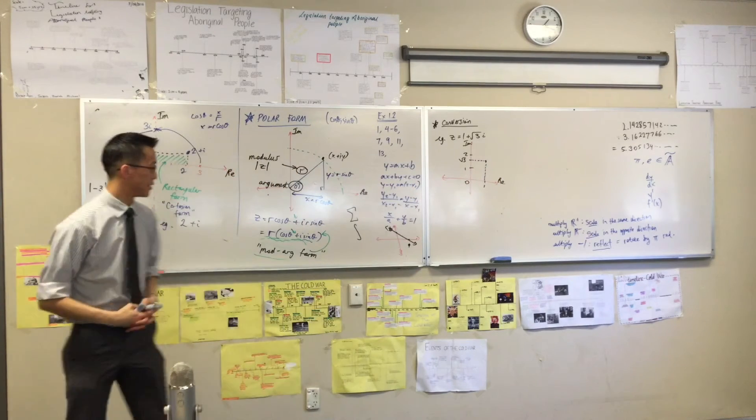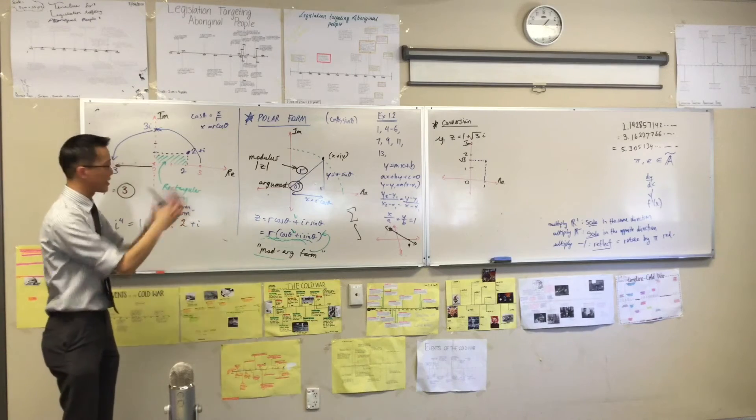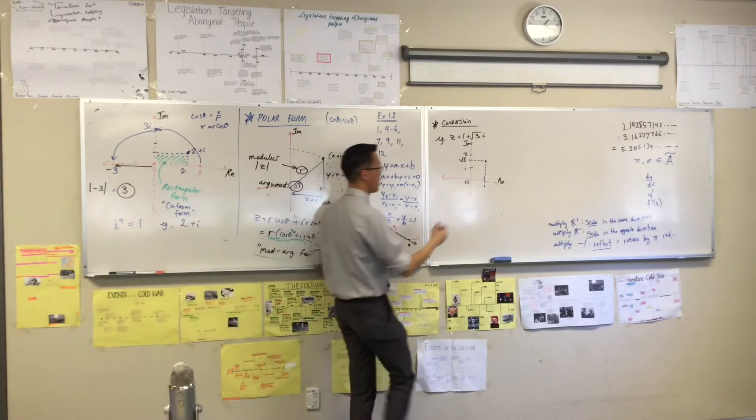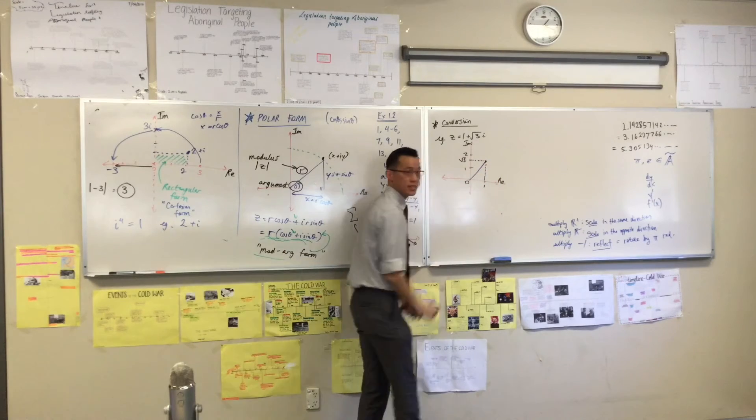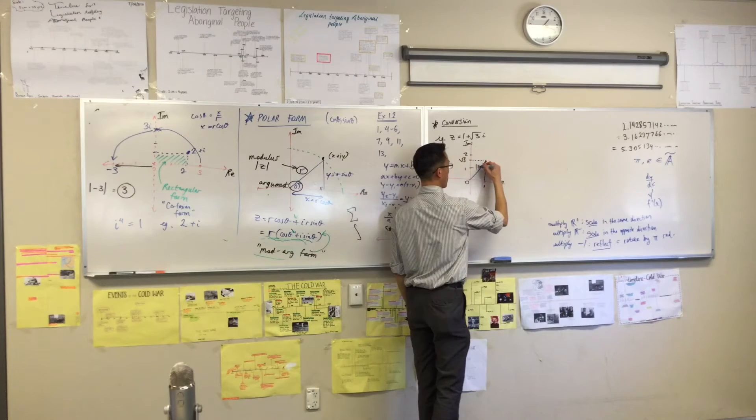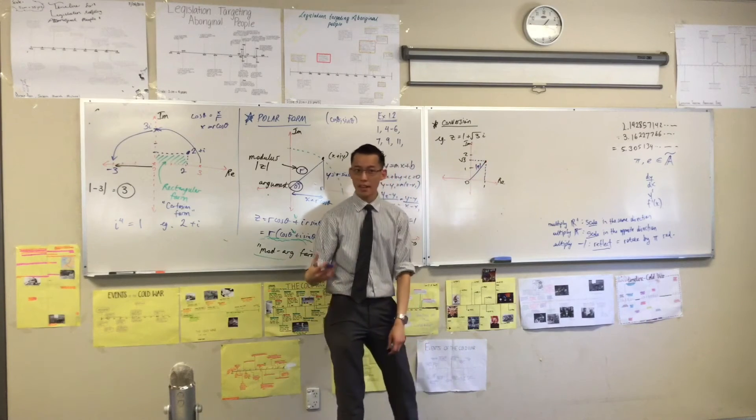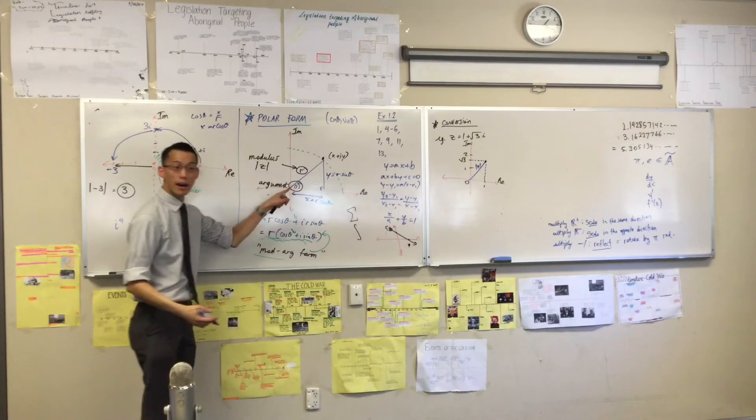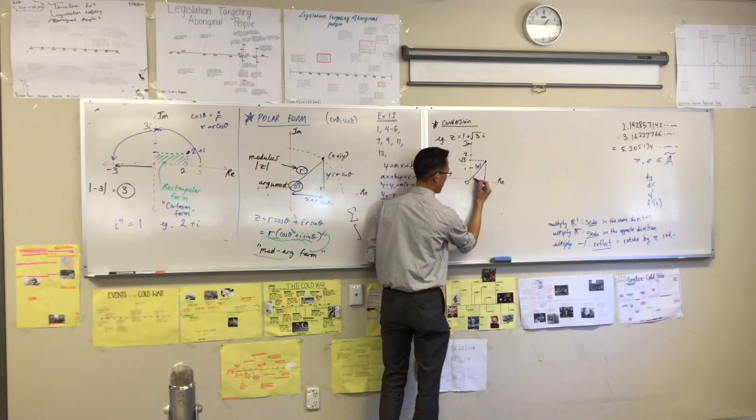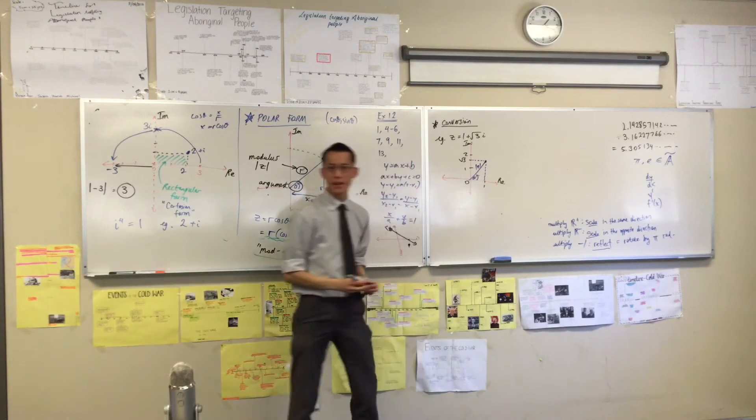So if this is 1 and this is root 3, where's 1 plus root 3i lying? It's going to be over here. Maybe you want to put in some lines to show the rectangle that sort of makes it rectangular form. Like so. Now what do I need out of this? If I want to convert, this is already in rectangular form, how am I going to put it into polar form? I need two pieces.